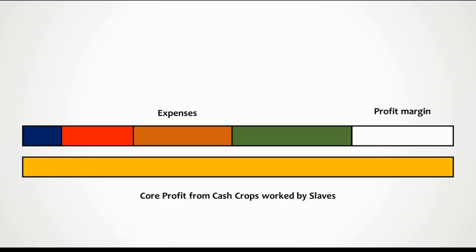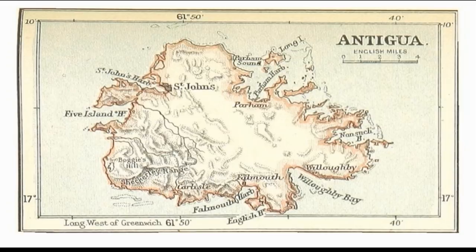Slavery might not have been the most economically successful system. You might think it's a win — you get people to work very hard without paying them. But you do have to feed, house, and clothe the slaves, and replace them if they die. In fact, the British found on West Indian plantations that they were actually making more money and were more profitable after slavery had been abolished. I'm going to look into this a little later in the video.